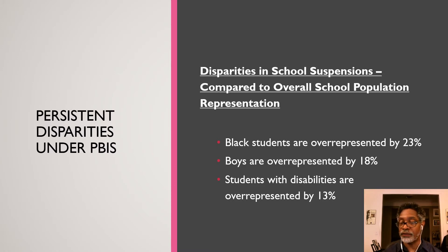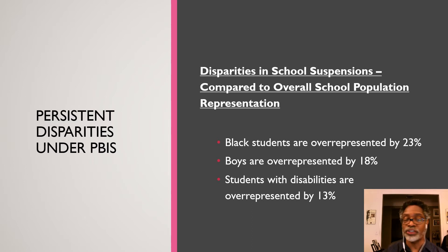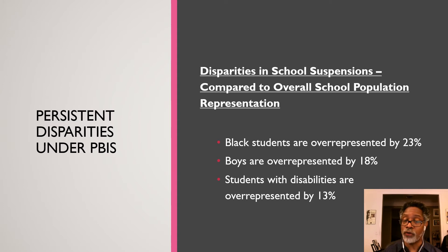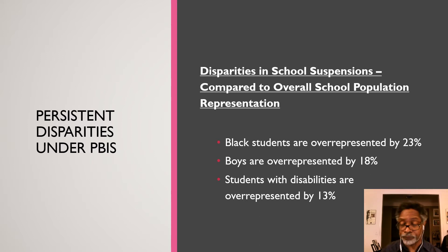If we think about the fact that PBIS has been in place for over 20 years and we still have these disparities, we need to look at what the data says. In terms of disparities in school suspensions compared to overall school population representation, Black students are overrepresented by 23%, boys are overrepresented by 18%, and students with disabilities are overrepresented by 13%. This connects with what we talked about regarding critical special education data.